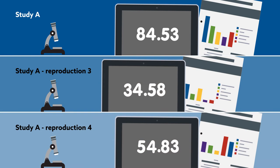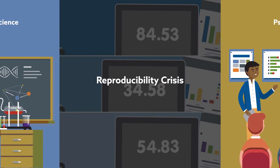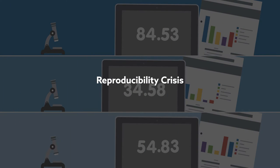More troubling still is that when we do try to repeat things, we often can't reproduce the results. After several high-profile failures to reproduce results in fields such as biomedical science and psychology, many scientists now think we're in the middle of a reproducibility crisis that threatens to undermine the public's faith in science.